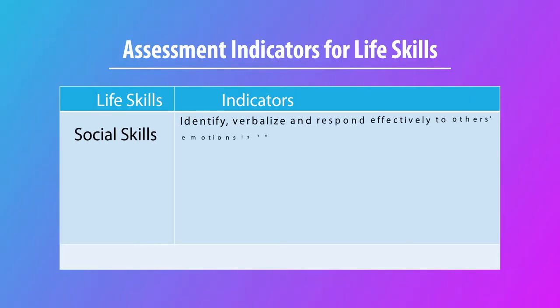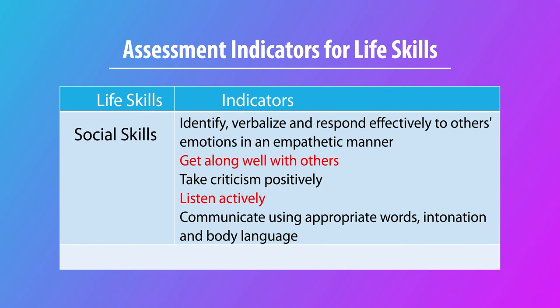For assessing social skills, indicators include: identifying, verbalizing, and responding effectively to others' emotions in an empathetic manner; getting along well with others; taking criticism positively for improvement; listening actively when someone is speaking or demonstrating; and communicating using appropriate words, intonation, and body language. If these behaviors are present, social skills are developing among your learners.